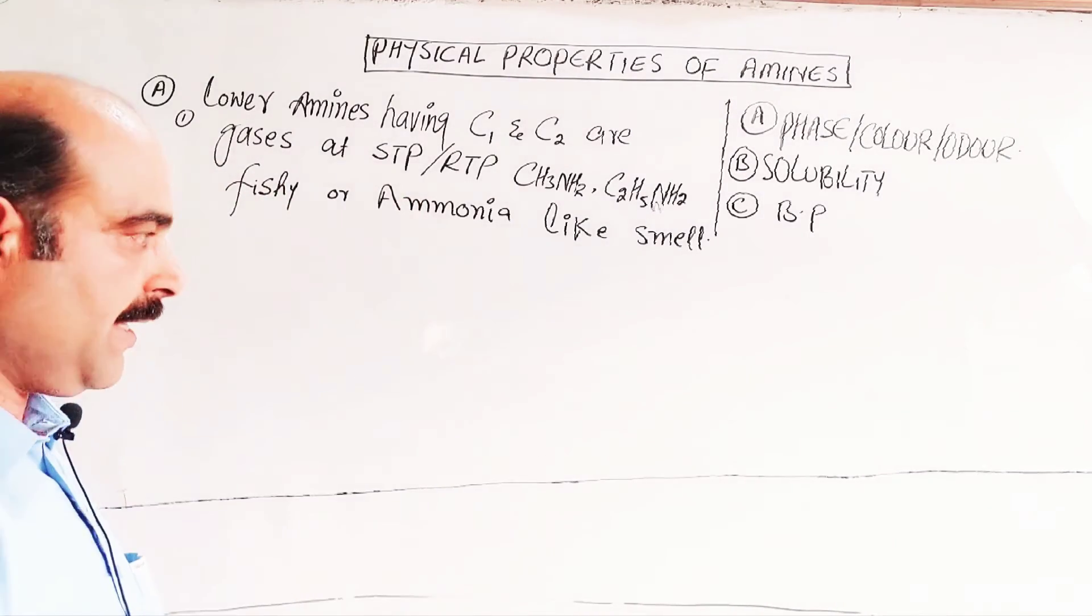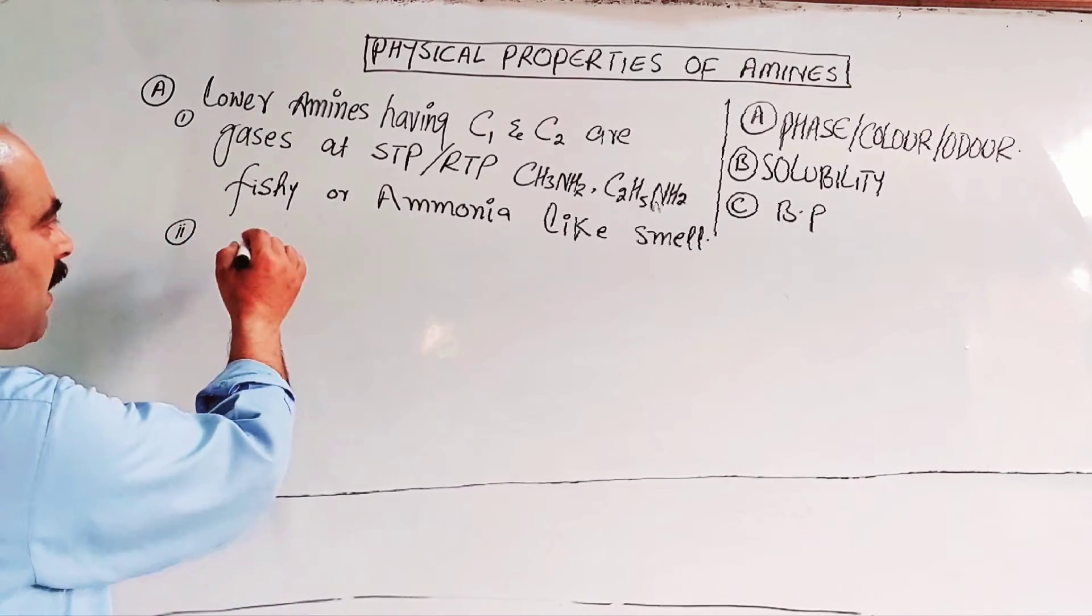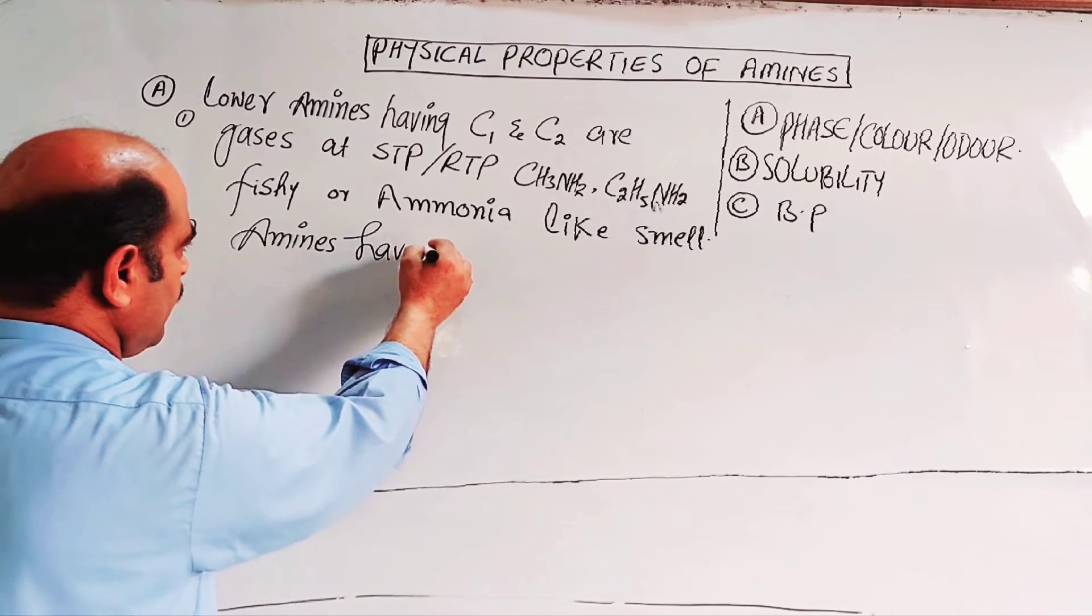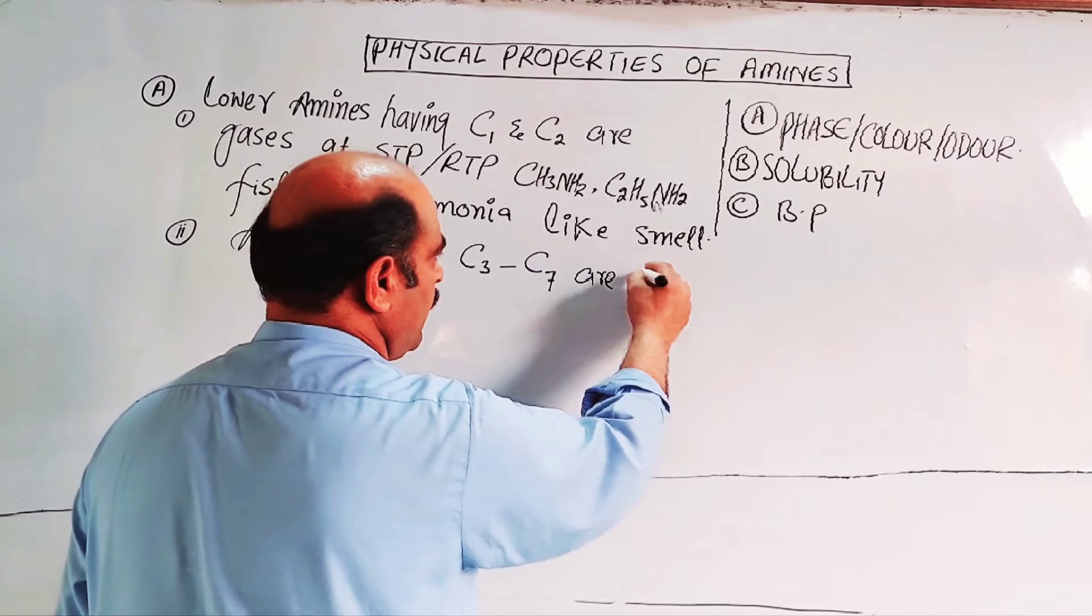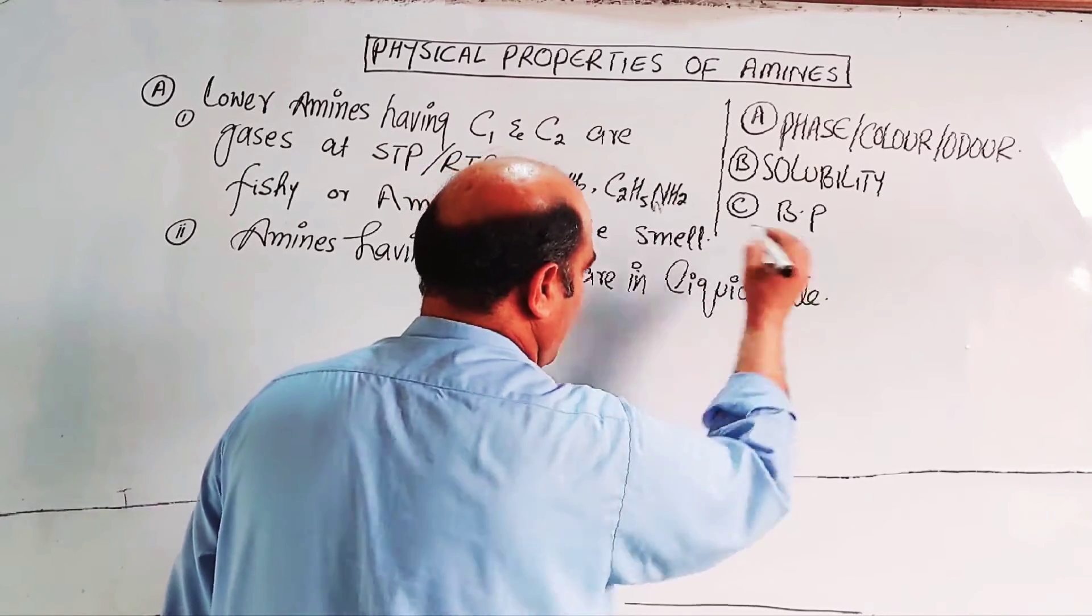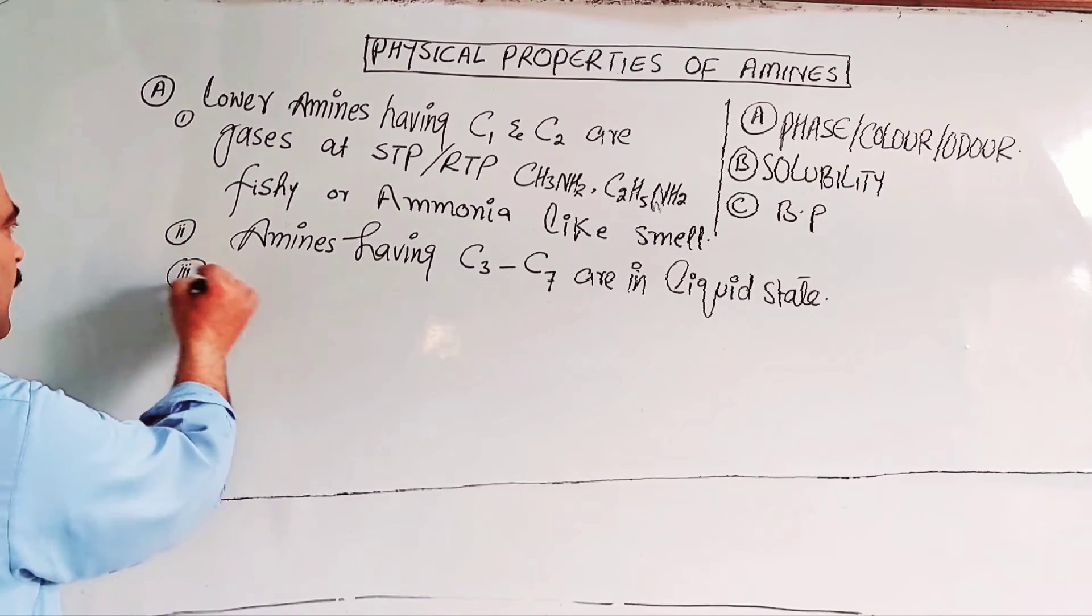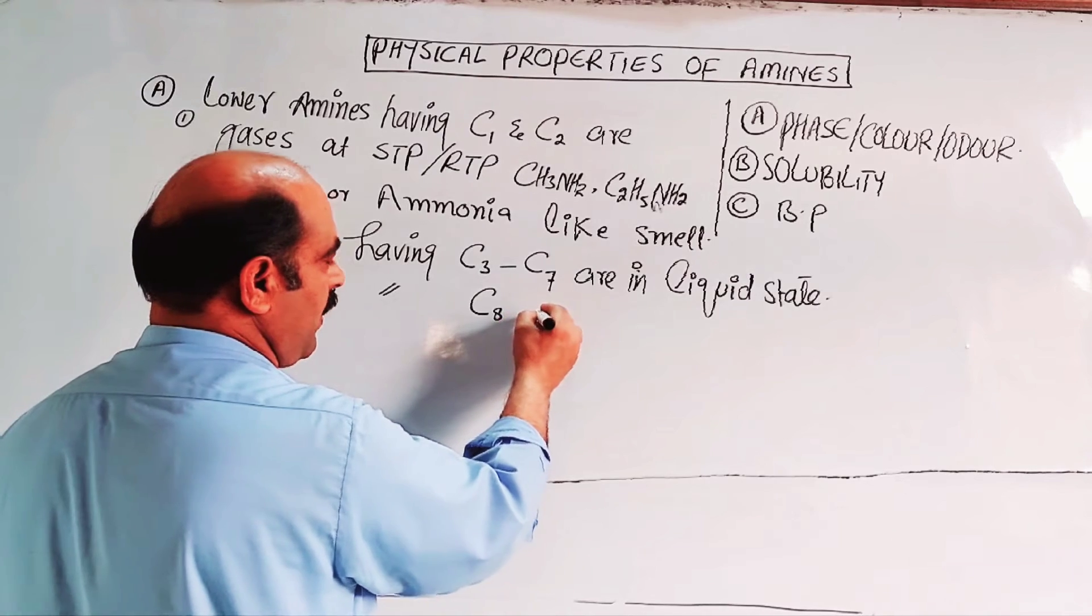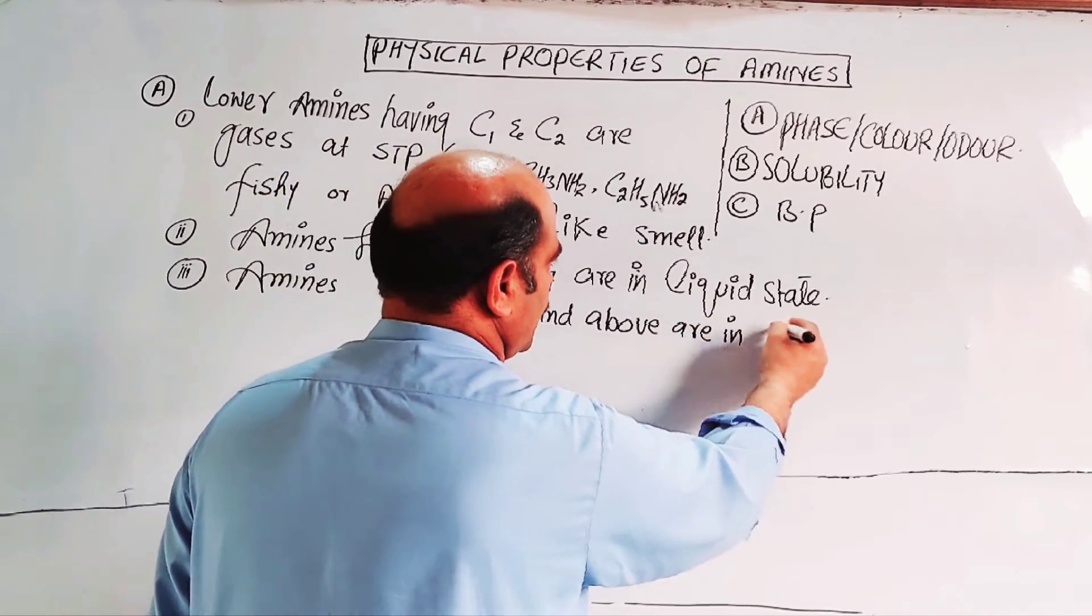Second category: higher amines having carbon 3 to carbon 7 are in liquid state under ordinary conditions of temperature and pressure. Third category: amines having carbon 8 in the alkyl chain and above are in solid state.